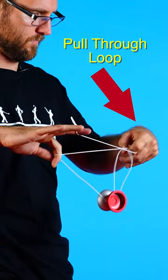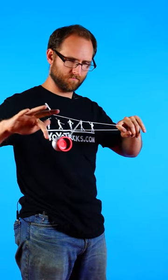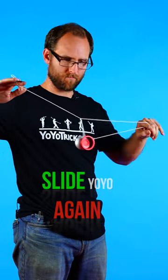From there pinch the slack and pull it through the loop. You can then slide the yoyo over to the right, drop the string off your yoyo index finger, slide it to the left, drop the yoyo out and bring it back to your hand.